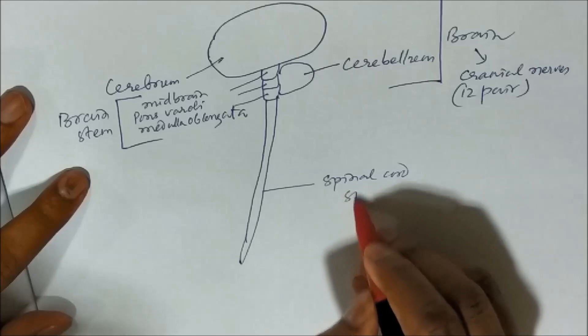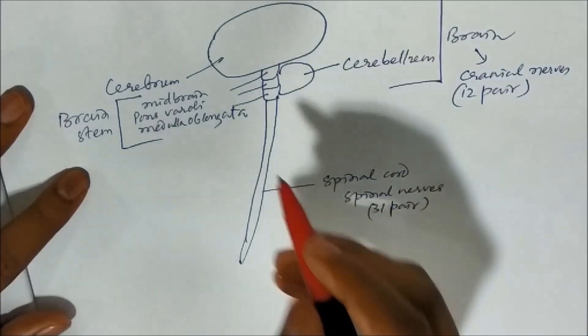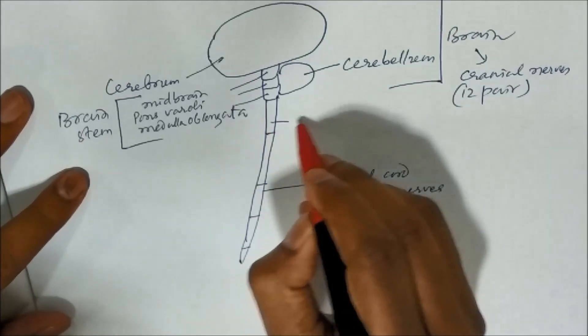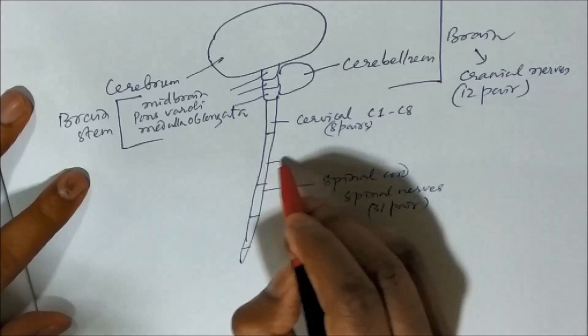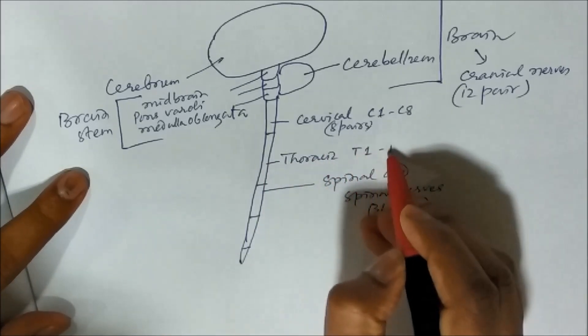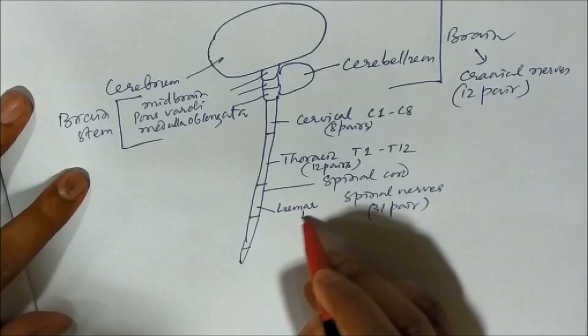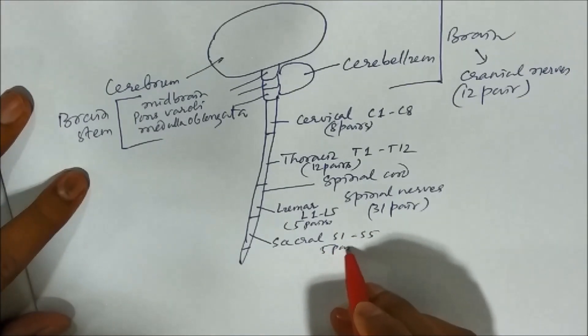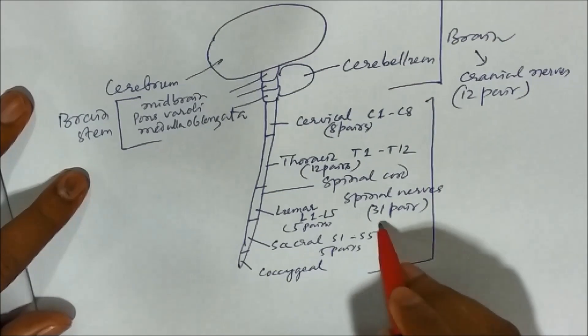And the spinal cord nerves are called spinal nerves. And they can be divided into cervical C-1 to C-8, 8 pairs. Then we have thoracic T-1 to T-12, 12 pairs. Then lumbar L-1 to L-5, 5 pairs. Similarly sacral, S-1 to S-5, 5 pairs. And finally coccygeal. So all these together are thirty-one pairs.